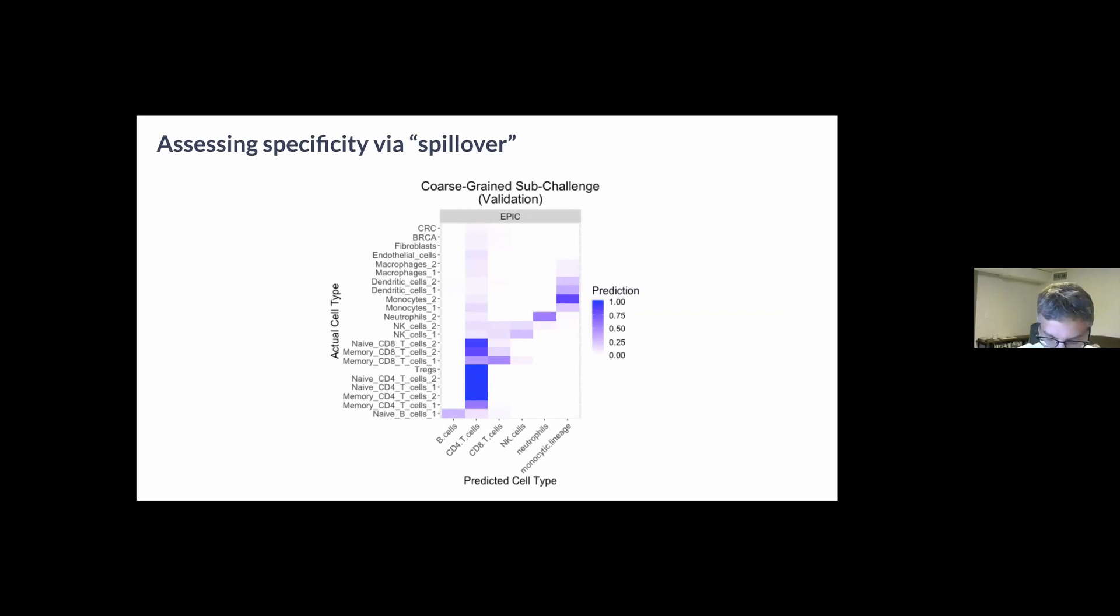In the post-competitive phase we're also assessing each method's specificity and sensitivity. Roger, alluding to one of your earlier questions, we did use in silico admixtures created from the purified expression profiles. Our approach to assessing specificity quantifies the prediction of a cell type X in a sample only containing a different cell type Y.